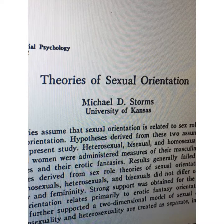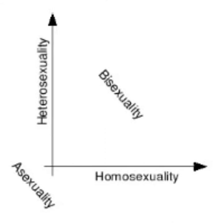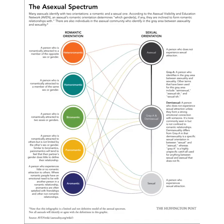It wasn't until 1980 when Michael Storms conducted a study, which led him to create a two-dimensional chart with the X and Y axis depicting heteroeroticism and homoeroticism, and was able to finally take into account asexuality. Since then, asexuality has been able to evolve into its own spectrum.